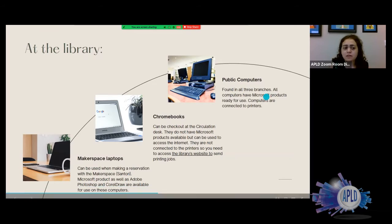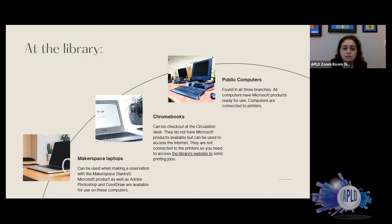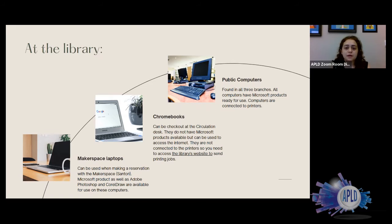Now I wanted to talk about the different computers available here through the library. First are the public computers, which you can find in all three branches. They all come with Microsoft products loaded — Word, Excel, PowerPoint — and are connected to the printers. You just print everything, head to your closest printer in the library, scan your library card, and everything you sent will come out. If you want a Chromebook, you can check one out at the circulation desk — maybe you wanted to sit somewhere quieter or take it home.